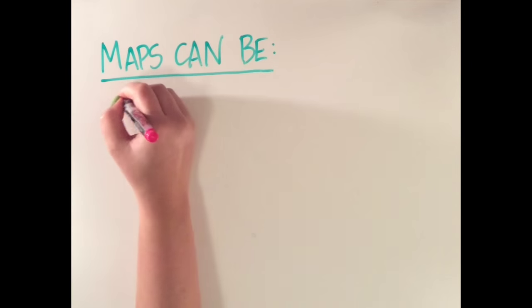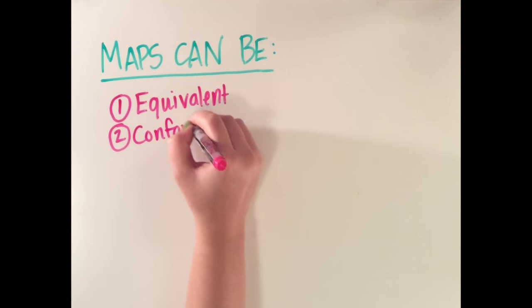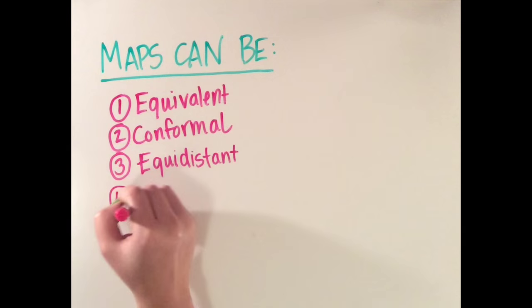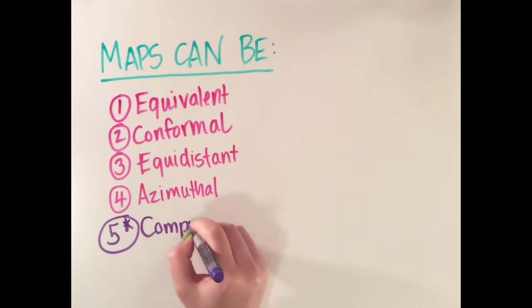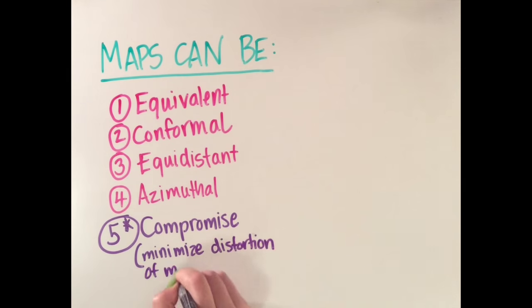Maps can be either equivalent, conformal, equidistant, azimuthal, or compromise, which tries to balance the distortions of multiple traits by minimizing each of their overall accuracies.